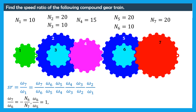Gears 4 and 5 are meshed together, thus omega 5 over omega 4 is equal to minus N4 over N5. Gears 3 and 4 are also meshed together, thus omega 4 over omega 3 is equal to minus N3 over N4. Gears 2 and 3 are mounted on the same shaft, thus they have the same speed. Hence, omega 3 over omega 2 is equal to 1.